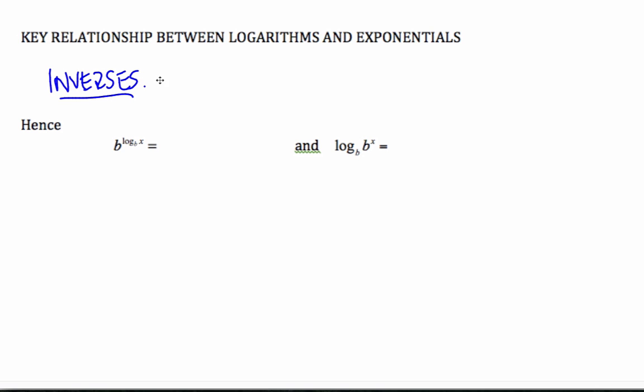Because what inverses are, if you remember, they're the undoing. So if I start off with some variable a, and I take a and apply an exponential of base b, now a is the exponent.